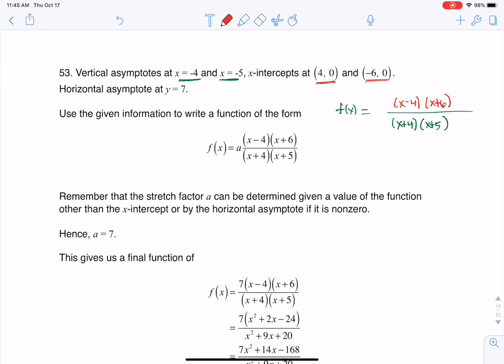If you have an x-intercept, those factors show up in your numerator only. If you have a vertical asymptote, these factors show up in your denominator only. And if you ever have a hole, those will show up in both your numerator and your denominator.